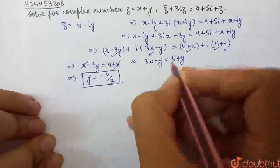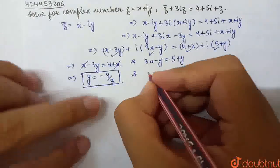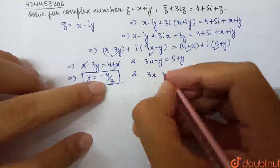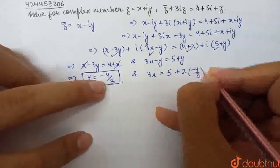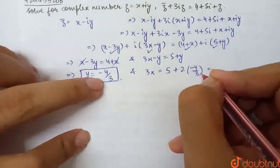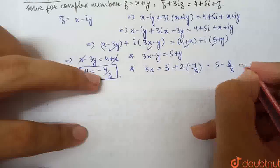Y what have I got, minus 4 by 3. Now I can put Y here. What have I got? 3X, and Y side change, is equal to 5 plus 2 times Y, 2 into minus 4 by 3. So what have I got? 5 minus 8 by 3.